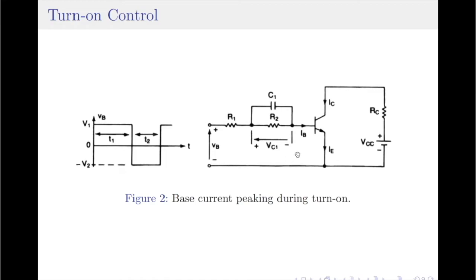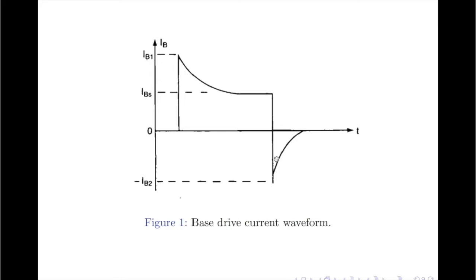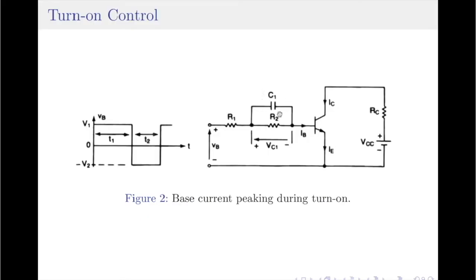Coming back to the circuit diagram, this circuit can also be used for turn-off control. When the input voltage is changed from plus V1 to minus V2, the capacitor voltage is added to the input voltage Vb which equals minus V2, and therefore a larger negative voltage is seen across the base of the transistor. This causes the base current to peak during the turn-off as well, as shown in the diagram. Meanwhile, the capacitor will also discharge from the previous value through R2 and charge to the current applied input voltage of minus V2 volts.